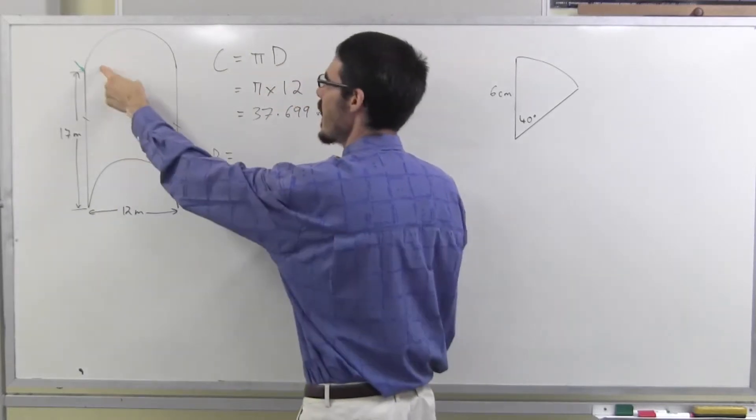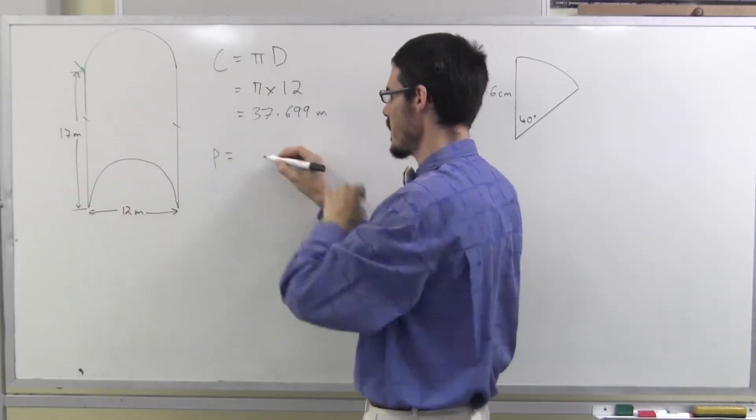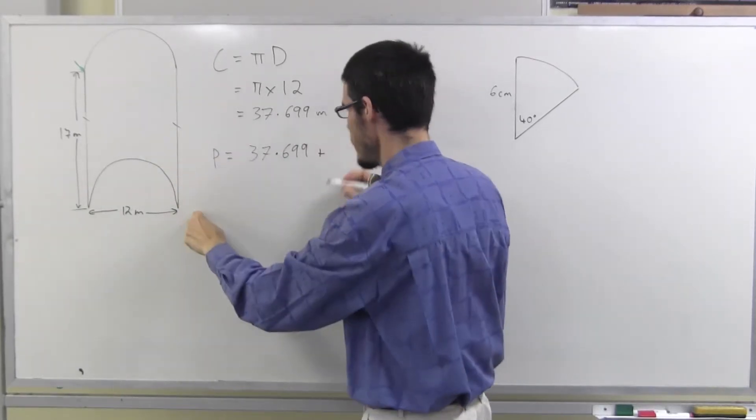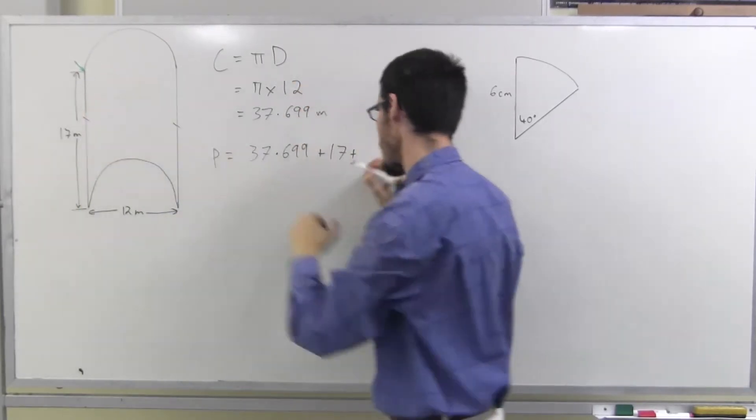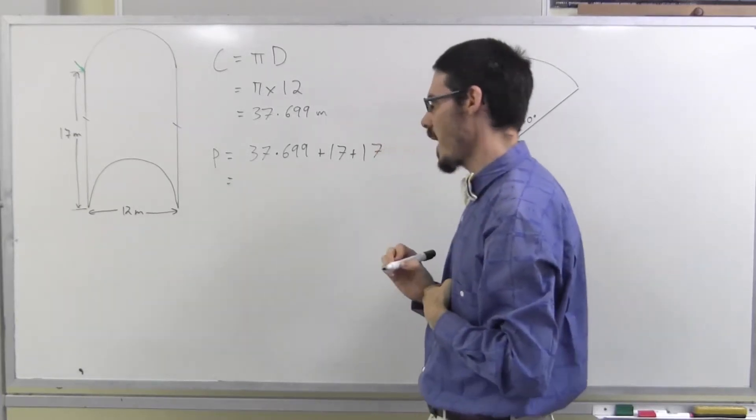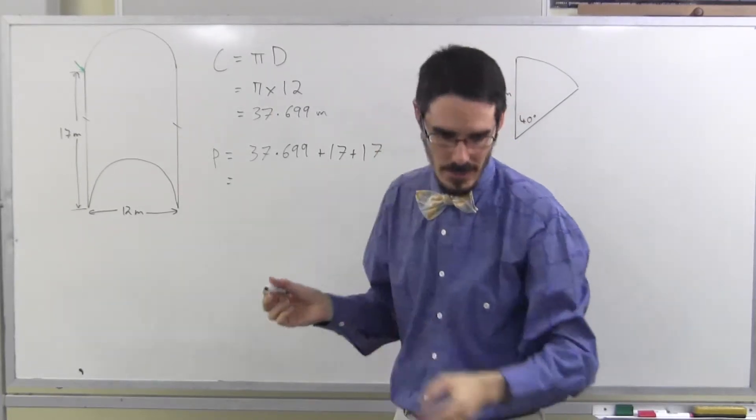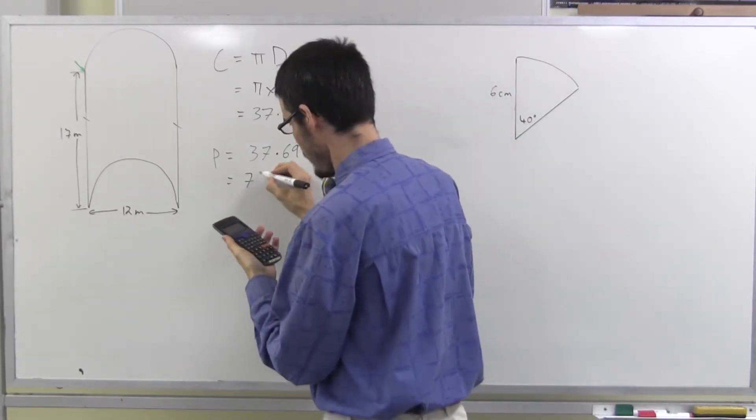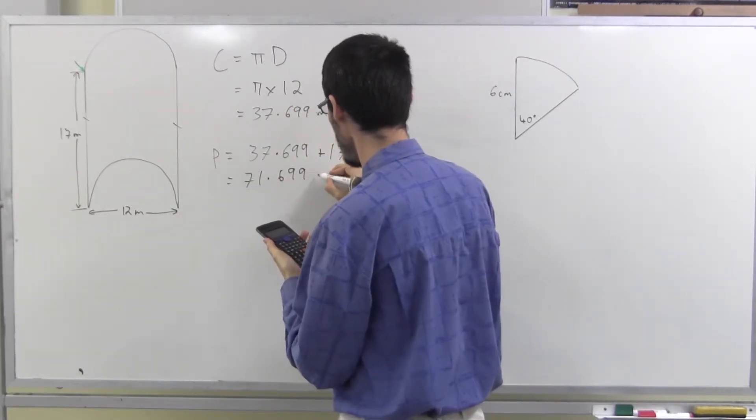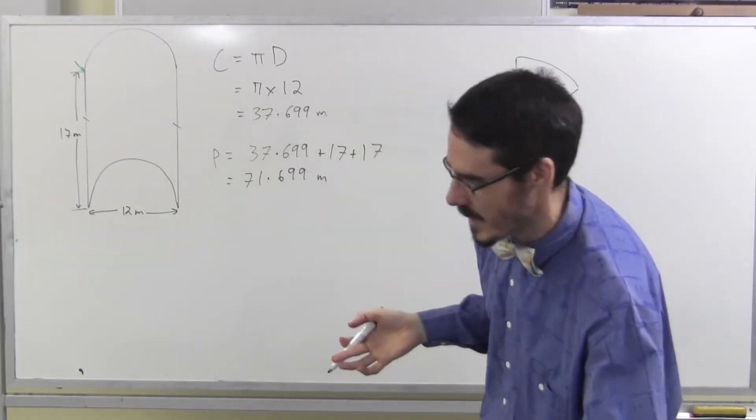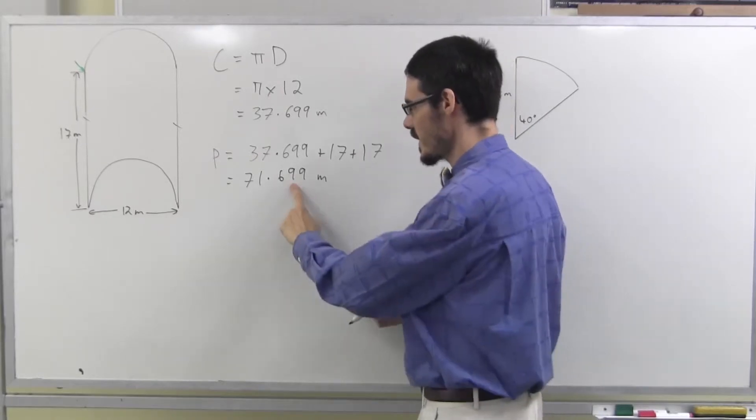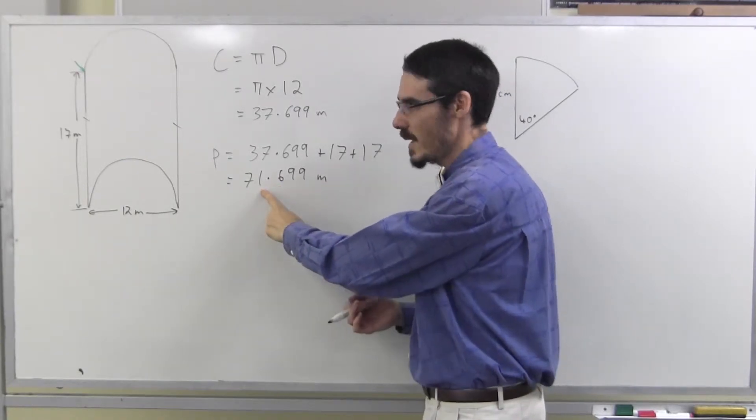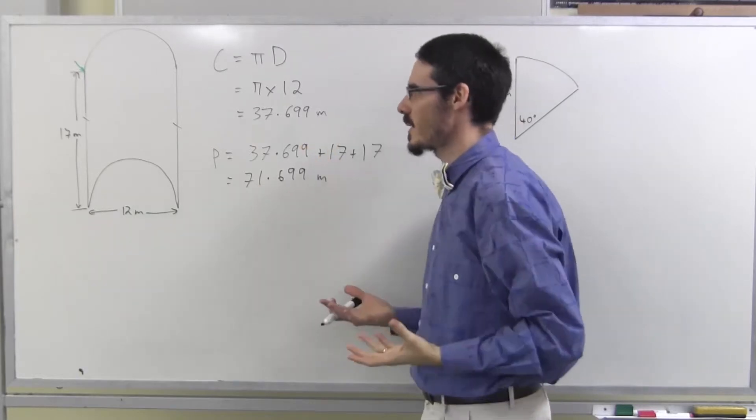So, now my perimeter is going to be a half here plus a half here, that's a whole circle. Plus this 17, plus that 17. Which is another 34. If you're not confident, get your calculator. Add 17, add 17. 71.699 metres. Now, the question might have said, round off to the nearest two decimal places, 0.70, or one decimal place, 0.7, or even nearest metre, 72 metres.